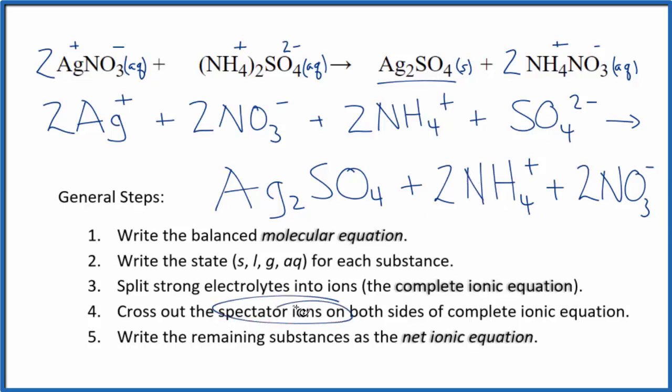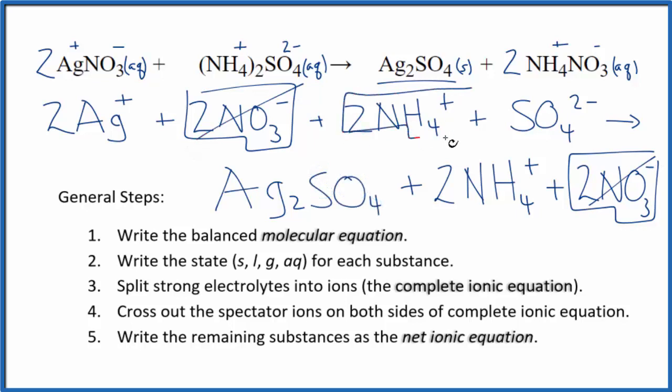Now we can cross out the spectator ions. They're on both sides. I have my reactants here, and then my products. So I see I have these two nitrate ions in the reactants and two in the products. I'm going to cross those out. They're spectator ions. I have these two ammonium ions here in the reactants and in the products again. So spectator ions, we cross them out.